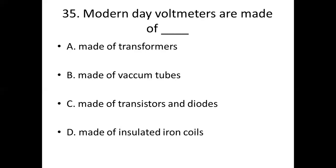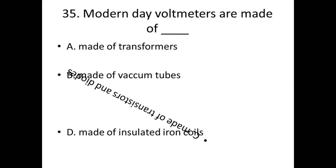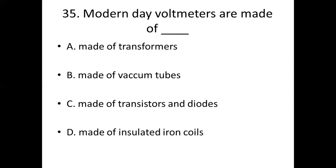Thirty-fifth bit. In modern days, voltmeters are made up of dash. Option A: made up of transformers. Option B: made of vacuum tubes. Option C: made of transistors and diodes. Option D: made of insulated iron coils. Answer: Option C, made of transistors and diodes.